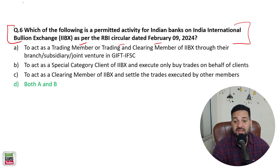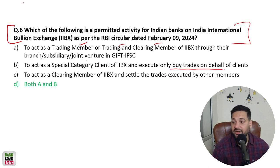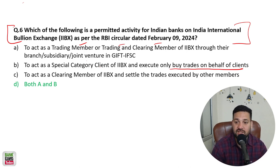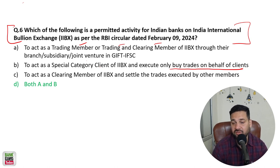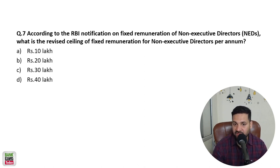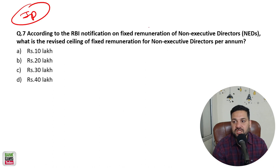Indian banks are permitted to act as a trading member or trading-and-clearing member of IIBX on behalf of their customers, or act as a special category client of IIBX and execute only buy trades on behalf of their clients. According to the RBI notification, banks can act as a trading member or as a special category client of IIBX executing only buy trades on behalf of clients.